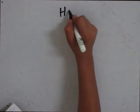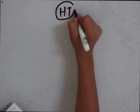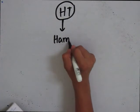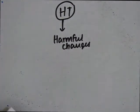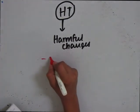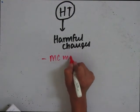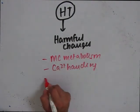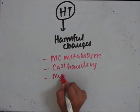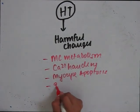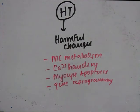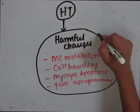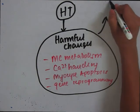There is hypertrophy of cardiac muscle, and this hypertrophy can lead to many harmful changes. The harmful changes are abnormal myocardial metabolism, abnormality in calcium handling, myocyte apoptosis, and gene reprogramming. Due to all these harmful changes, there is cardiac dysfunction.